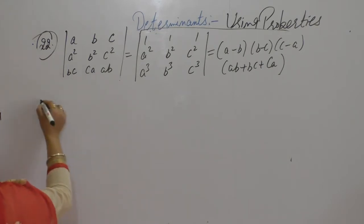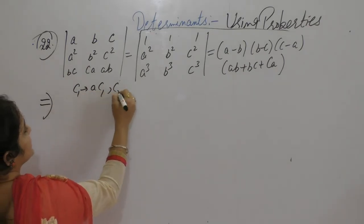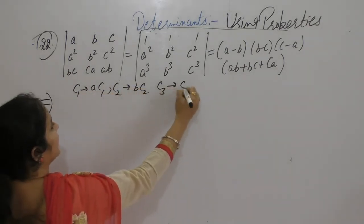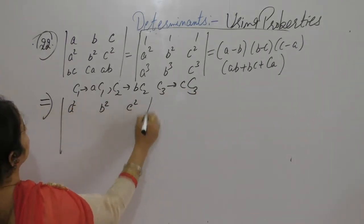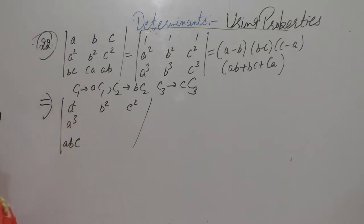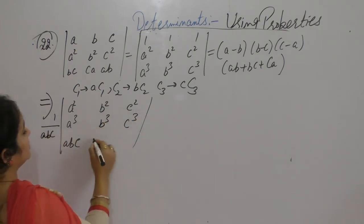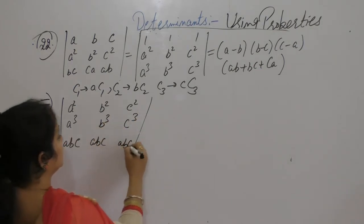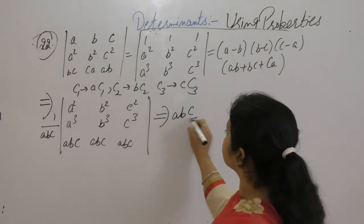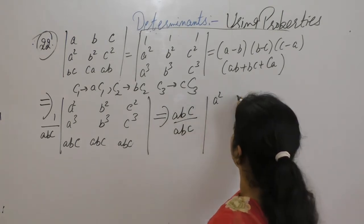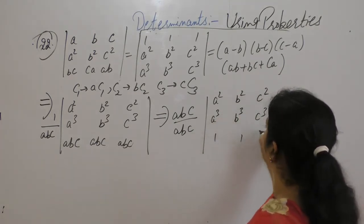Now take this determinant first. Multiply C1 by a, C2 by b, and C3 by c, giving entries a squared, b squared, c squared; a cubed, b cubed, c cubed. When multiplying we will have to divide by a·b·c. Now take a, b, c common from the third row, so it becomes a·b·c upon a·b·c, leaving: row 1 is 1, 1, 1; row 2 is a squared, b squared, c squared; row 3 is a cubed, b cubed, c cubed.